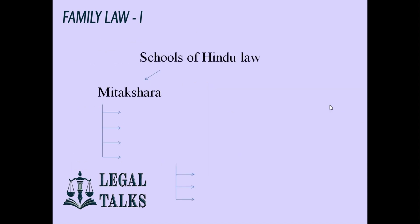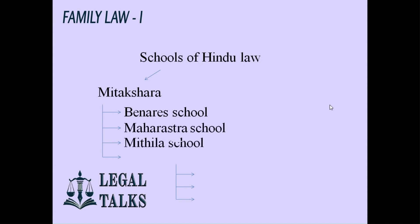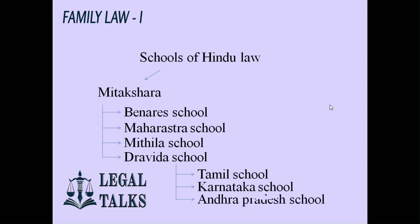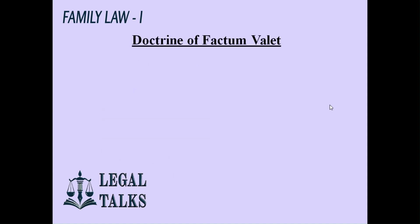Let's look at the subdivisions of Mitakshara school. This school flourished in all parts of India except West Bengal and Assam, where Dayabhaga school was prominent. Mitakshara school included subdivisions: the Banaras school, Maharashtra school, Mithila school, and Dravida school. The Dravida school was further divided into Tamil school, Karnataka school, and Andhra Valesha school. These sub-schools were seen in almost all parts of India except the Bengal region.